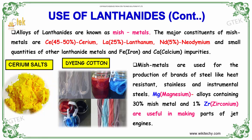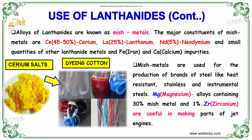Misch metals are used for the production of grades of steel like heat-resistant, stainless, and instrumental steels. Magnesium alloys containing 30% Misch metal and 1% zirconium are used in making parts of jet engines.